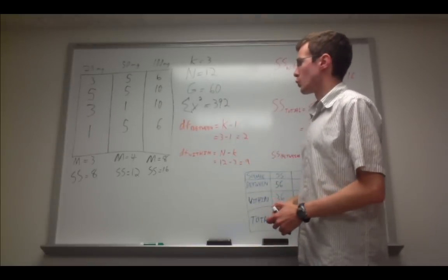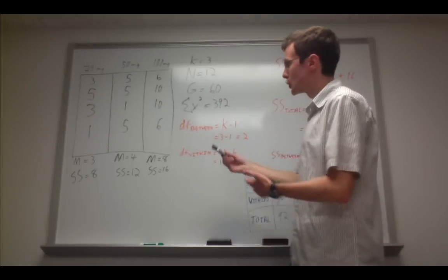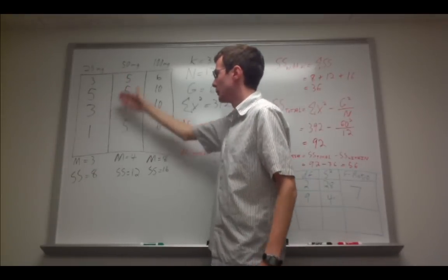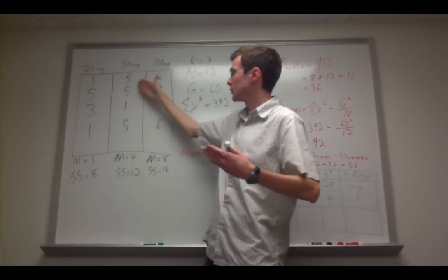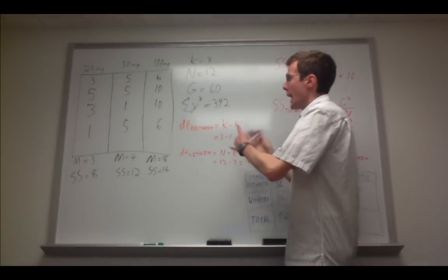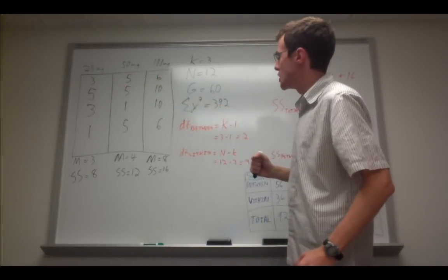G stands for the grand total. We simply sum up every value in all of these columns. So 3 plus 5 plus 3 plus 1 plus 5 plus 5... all of them, add them up together, and we get a G of 60.